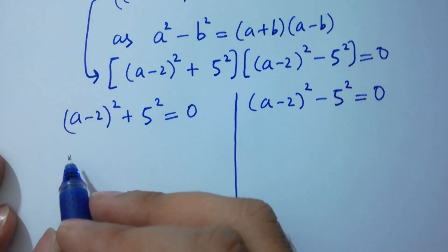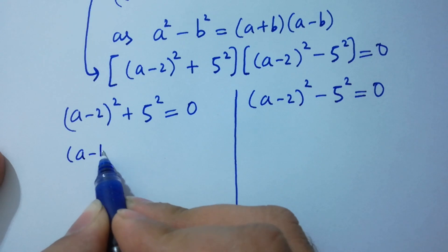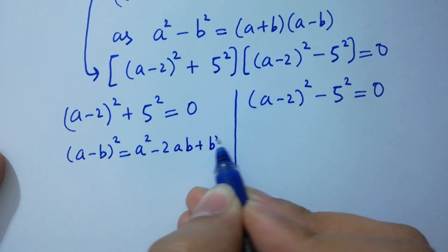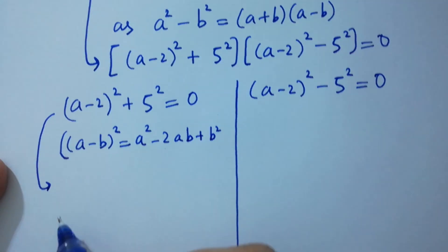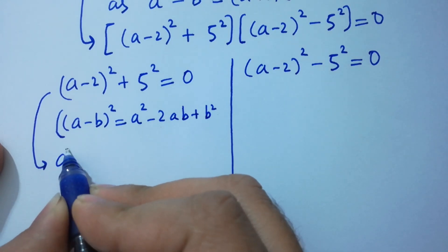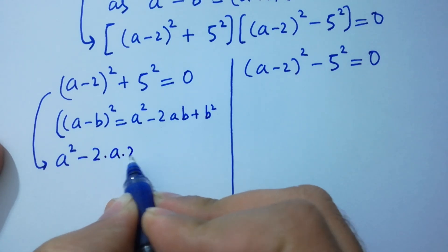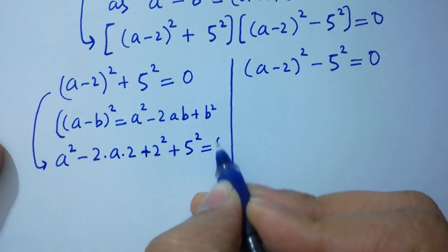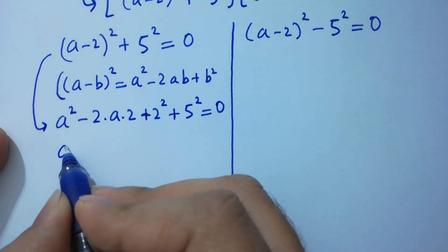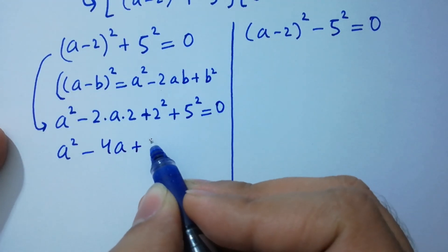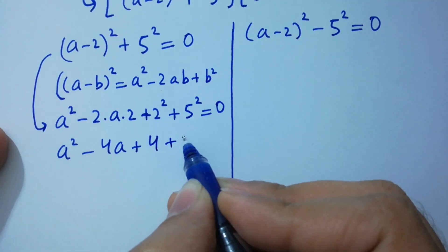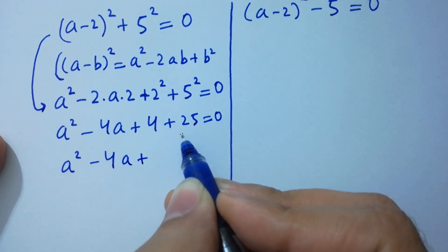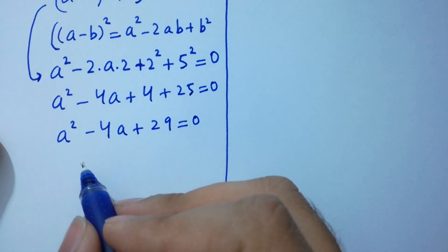For the first case, using (a minus b)² equals a² minus 2ab plus b², expanding (a minus 2)² plus 5² equals 0 gives a² minus 4a plus 4 plus 25 equals 0, which simplifies to a² minus 4a plus 29 equals 0. This is a quadratic equation.